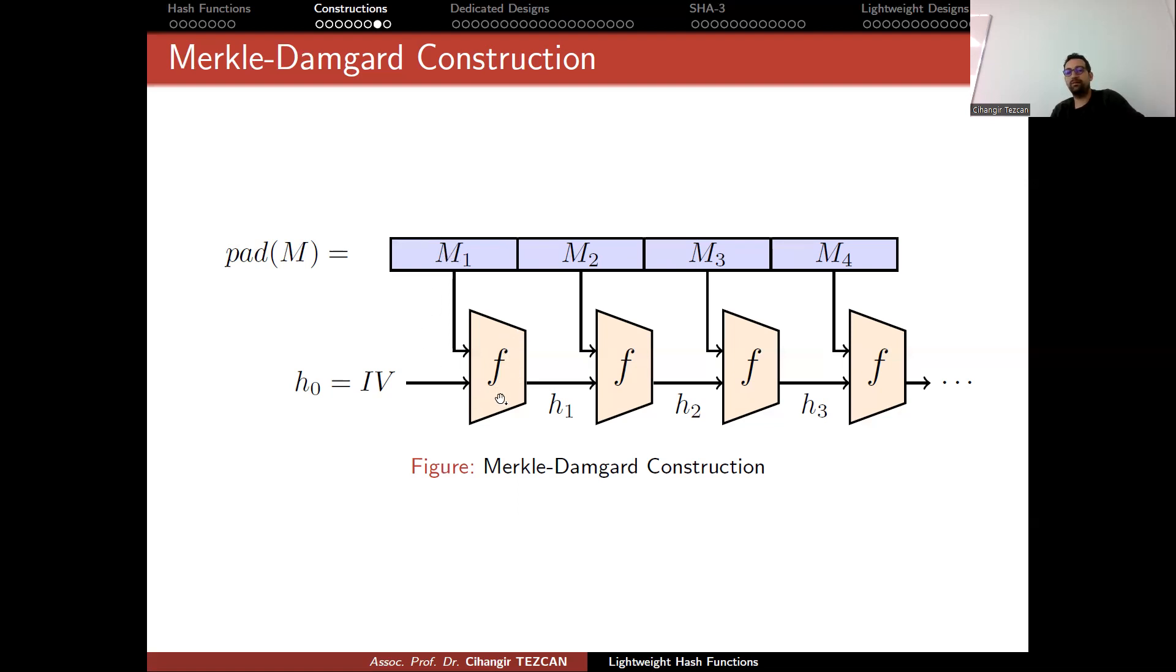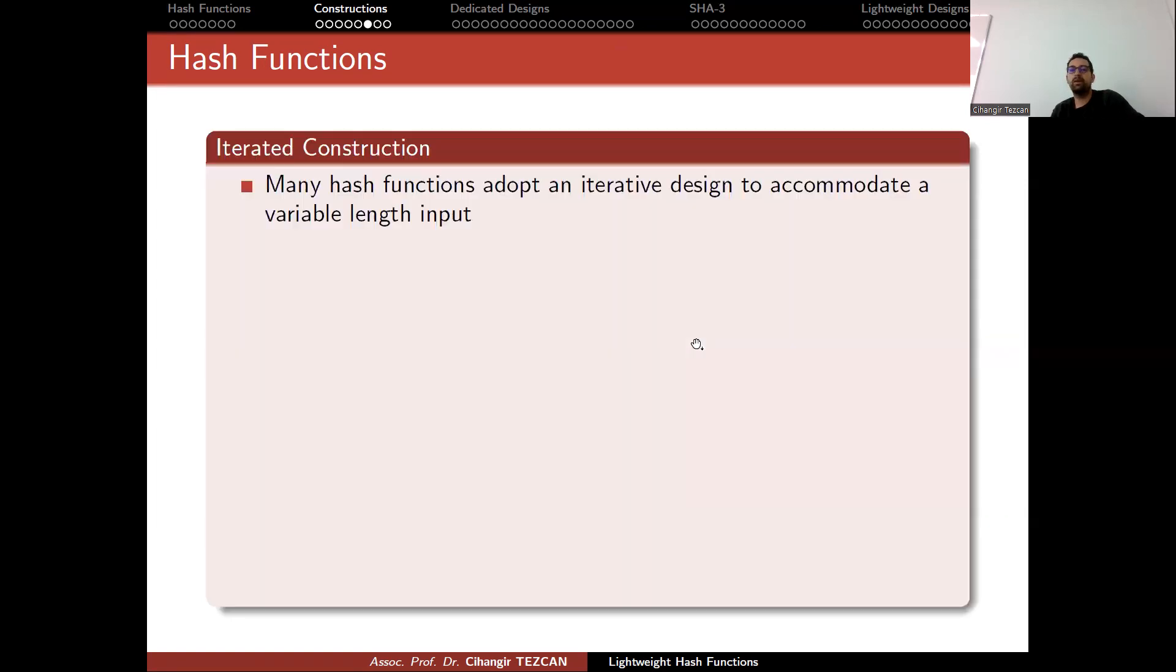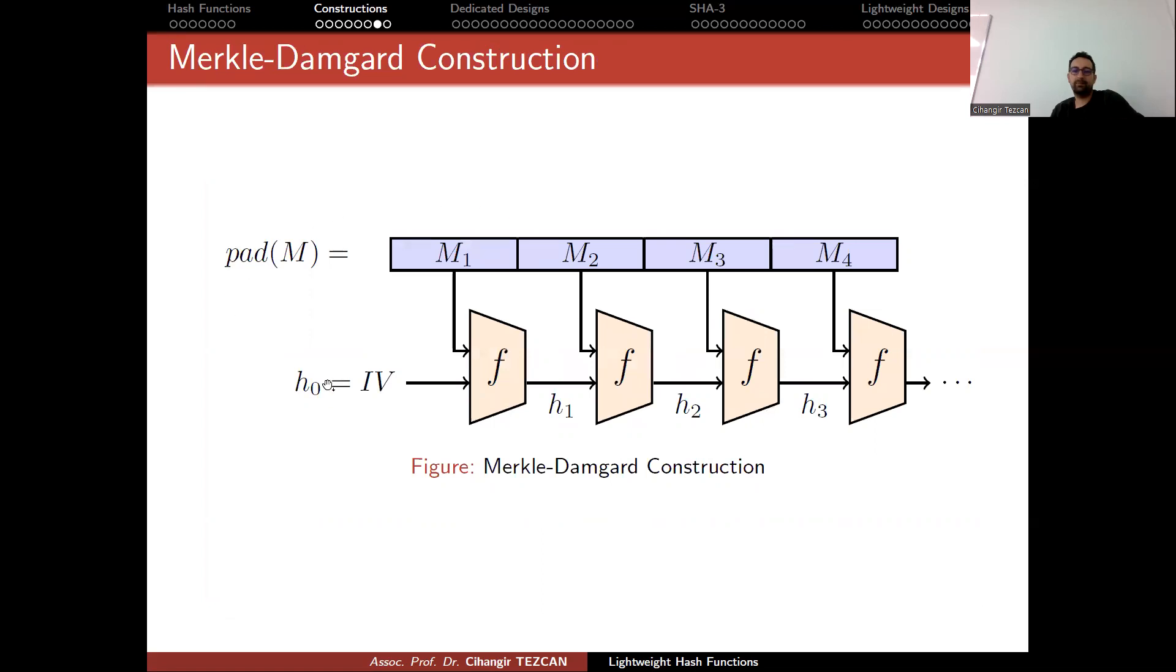So here actually now we need to talk about how F can be constructed. So in the previous pictures, I showed you that we can use instead of the F function, we can use a block cipher. And instead of that Merkle-Damgard construction, we can use this picture. But dedicated designs follow this idea. So instead of F, you can put MD4, MD5, SHA-1, SHA-2, SHA-3, et cetera. And we will see how they look like in the following slides.